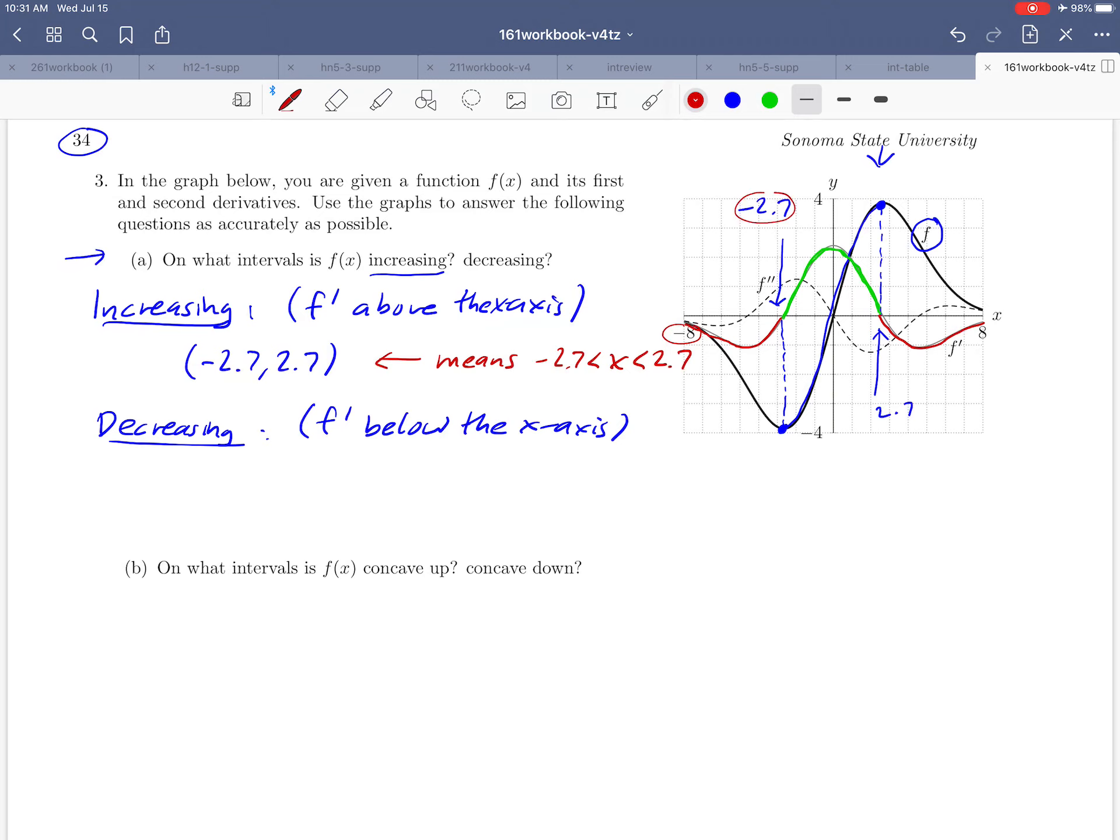So from negative 8 to negative 2.7 and then from 2.7 to 8. So we'll write both of those intervals down and those are going to be the intervals where f is decreasing. So I think we have an answer to part a and we are ready to move on to part b. And just so that our graph doesn't get too cluttered here I'm going to go ahead and erase the stuff that we drew in before.